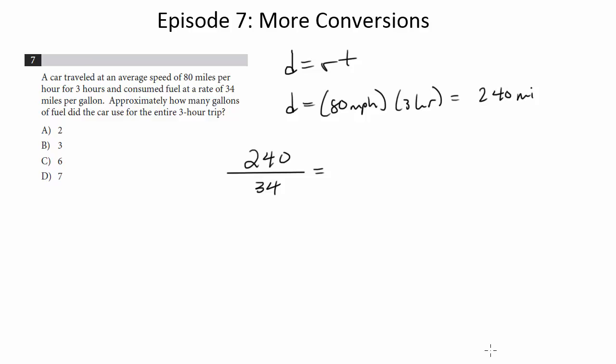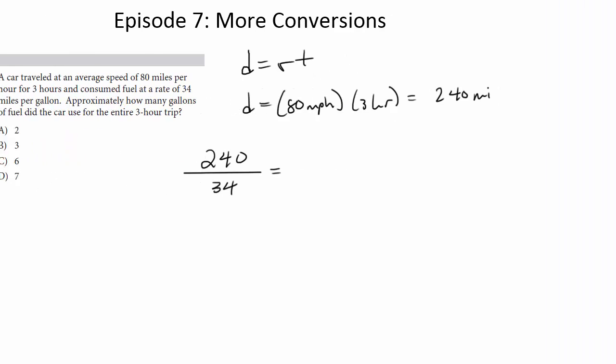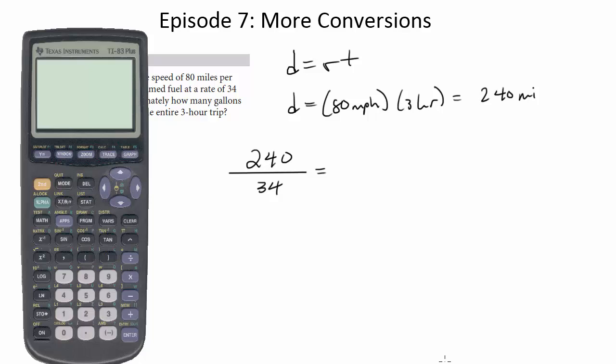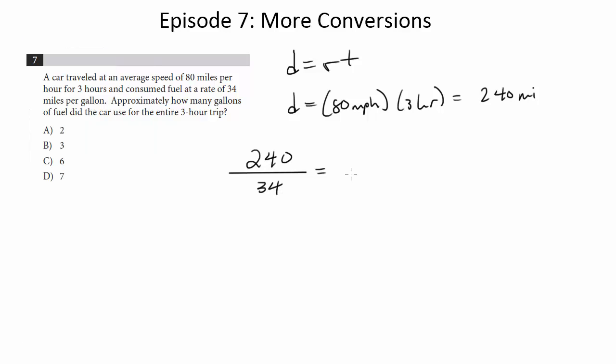So 240 divided by 34, we'll get an answer for that. 240 divided by 34 gives me 7.05, rounded up to 7.06, which is about 7. So we're going to go with choice D.